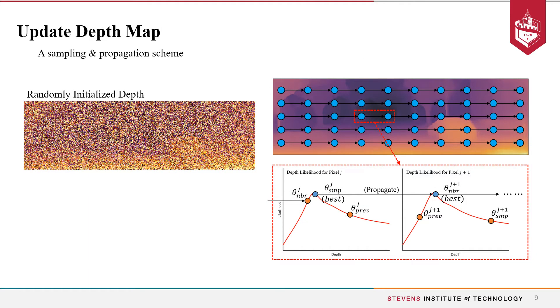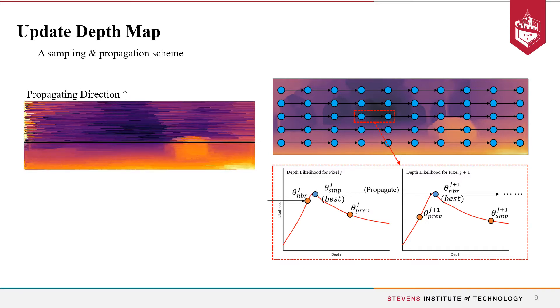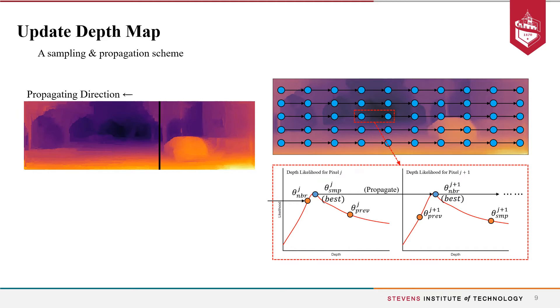For updating the depth map, we adopted a sampling and propagation scheme where the image 2D field is broken into alternatively directed 1D chains while depth values are randomly sampled and propagated through each chain. Furthermore, instead of standard MLE criteria for picking optimum depth, we introduced a maximum inlier estimation (MIE) criteria that maximize for the rigidness maps, which achieve better accuracy.